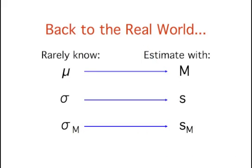Unfortunately, in the real world, it is very rare that we would know the mean and standard deviation of the population. Typically, we have to estimate these using our sample data. We estimate the population mean with our sample mean, estimate the population standard deviation with the sample standard deviation, and estimate the standard error of the mean with the estimated standard error of the mean.